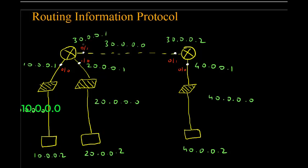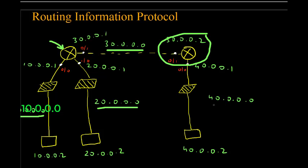We will configure this in Cisco Packet Tracer, but you must first know the configuration. This particular router has three networks connected to it. The network addresses are 10.0.0.0, 20.0.0.0, and 30.0.0.0. The second router has network 40.0.0.0 and network 30.0.0.0.